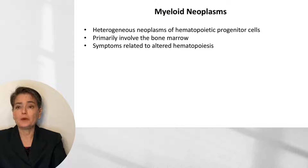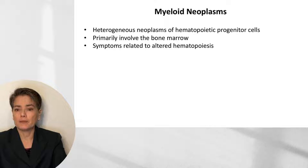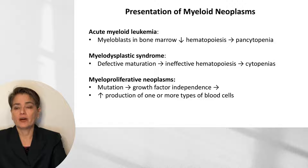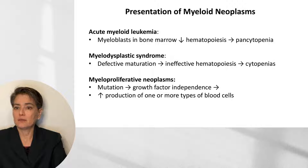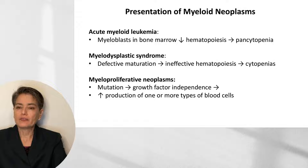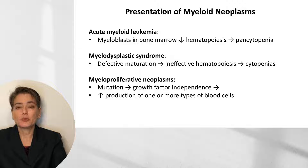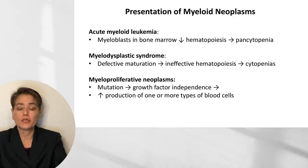Myeloid neoplasms are a heterogeneous group of hematopoietic progenitor cell neoplasms that primarily involve the bone marrow, with symptoms related to altered hematopoiesis. AMLs have abundant blasts that impede normal hematopoiesis, leading to pancytopenias. In MDS, defective maturation leads to ineffective hematopoiesis and cytopenias. In MPNs, a mutation confers independence from growth factors, resulting in increased production of one or more blood cell types — for example, in polycythemia vera, a significant increase in hematocrit.